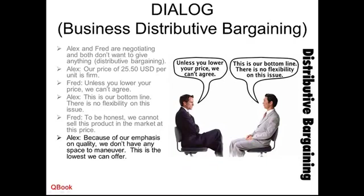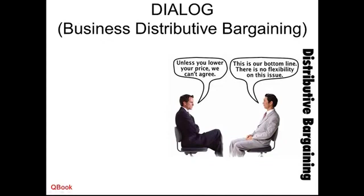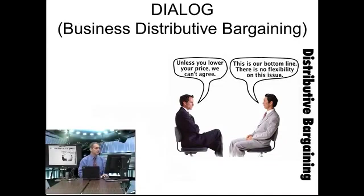Both sides are giving very clear reasons why they can't change. Alex is saying the price is $2,550, and Fred is saying that's too high, you must lower. From then on, they just keep saying no, I can't. Both sides have reasons such as quality and market demand — all of these things they keep using as the reason for not wanting to change. So here we can see this must be distributive, because both sides are really going strongly to not give in.